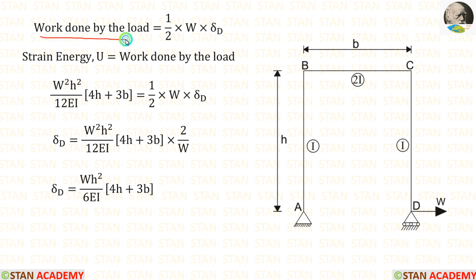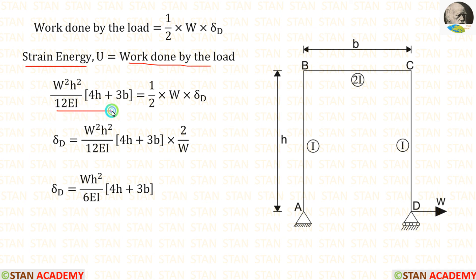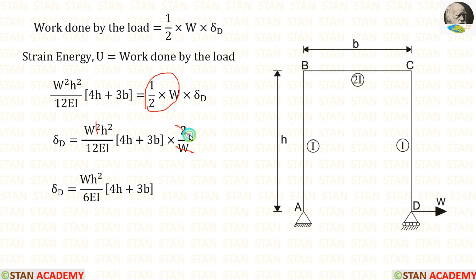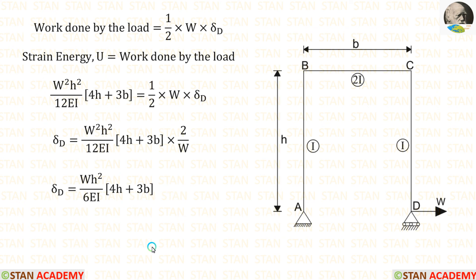We know the formula for work done by the load is (1/2) into load into deflection. At point D, we are calculating the deflection, and the load at D is W. We equate strain energy U to work done by the load. Taking W/2 to the left side, we cancel W with W² and 2 with 12 to get 6. Finally, the horizontal deflection at point D equals WH²(4H + 3B) / (6EI). Now we are going to end this session. Thank you for watching this video.